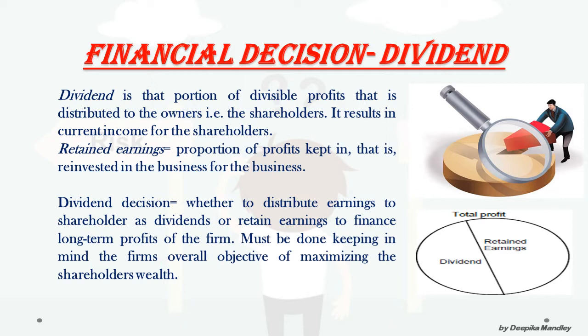The dividend decision is basically to decide whether to distribute earnings to shareholders as dividends or retain them as retained earnings to finance long-term growth of the firm — how much is to be distributed as dividends and how much is to be kept aside as retained earnings. This decision must be taken keeping in mind the firm's overall objective of maximizing shareholders' wealth, which is the objective of financial management.